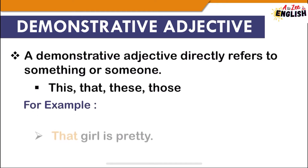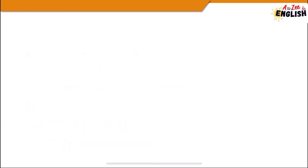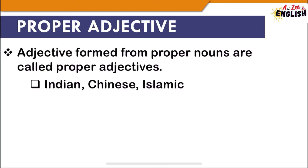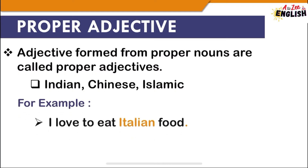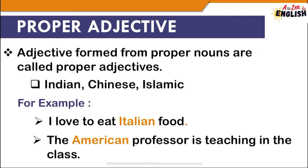For example, demonstrative adjectives: 'This girl is pretty' and 'That pen is green.' Next is proper adjective — adjectives formed from proper nouns. Proper adjectives are commonly used to say something is related to a specific person or place, such as Indian, Chinese, Islamic, Japanese, and many more. For example, 'I love to eat Italian food' and 'The American professor is teaching in the class' — Italian and American refer to the specific nouns Italy and America respectively.